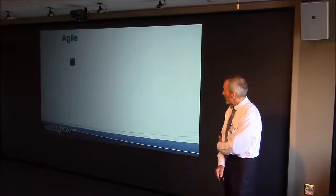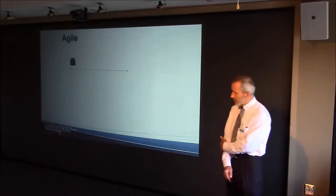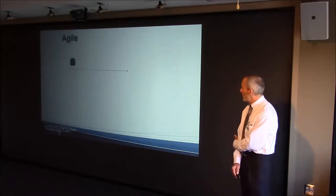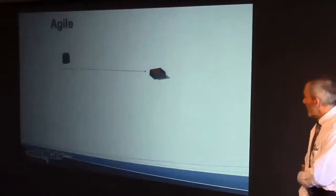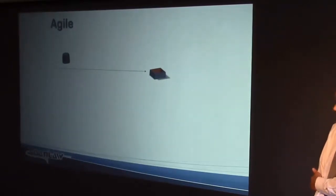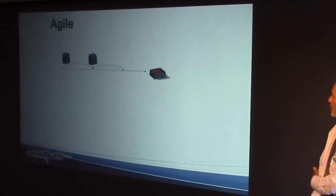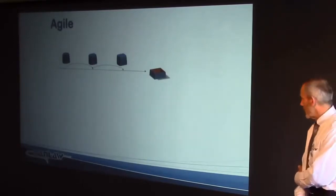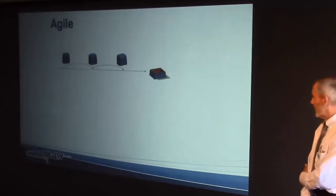I've got a quick animation here to go through. Say your company has a product — there it is on the left-hand side — and what the customer wants is something different. Obviously it's not going to fit. But we're going to take an agile approach, iterate a few times, and get closer and closer as we iterate, until finally we might have what's needed.